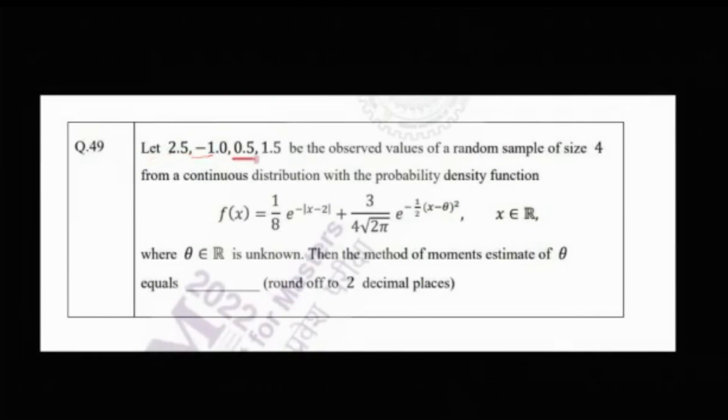The problem says that let 2.5, -1, 0.5, 1.5 be the observed values of a random sample of size 4 from a continuous distribution with this PDF. Theta is an unknown parameter.